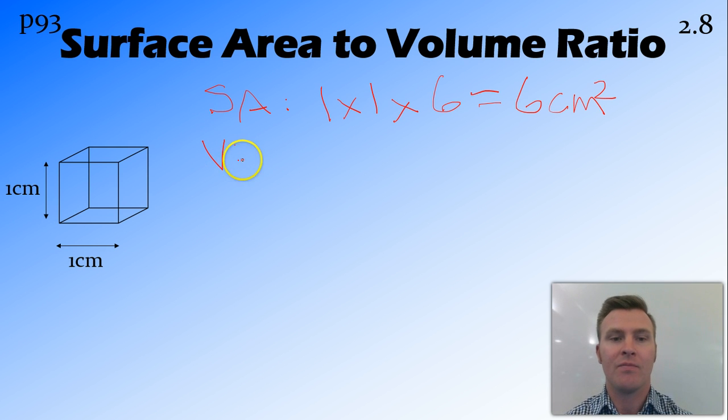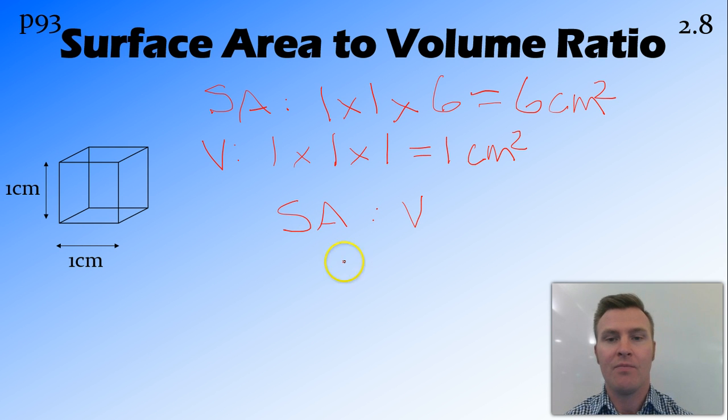Now, as far as volume goes, we're looking at the three-dimensional space here, so we get the height times the width times the length, and we find that it is 1cm cubed, which makes complete sense. So in our surface area to volume ratio, we have a surface area of 6 and a volume of 1. So this is the basic one.